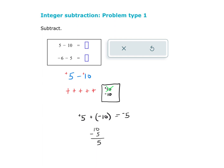Hopefully you can see a pattern developing here: when I am subtracting a number, what I'm really doing is adding the opposite of that number. This was a positive 10; this is a negative 10. The reason we're always adding the opposite is because we're taking away that original number, and when we give ourselves a zero pair, the opposite is what's going to be left.